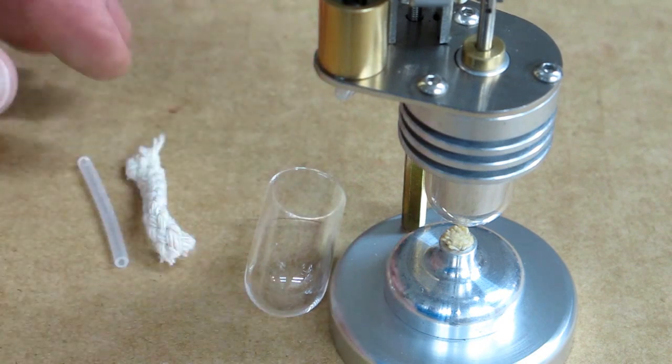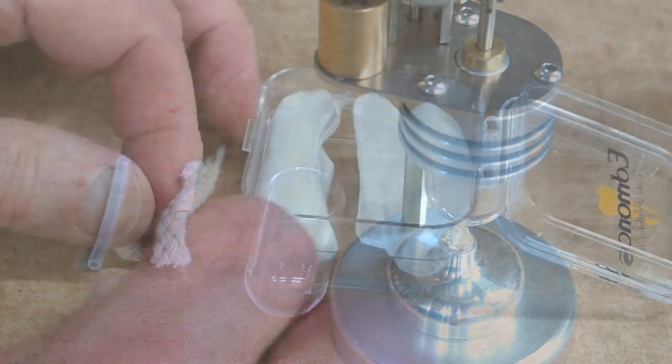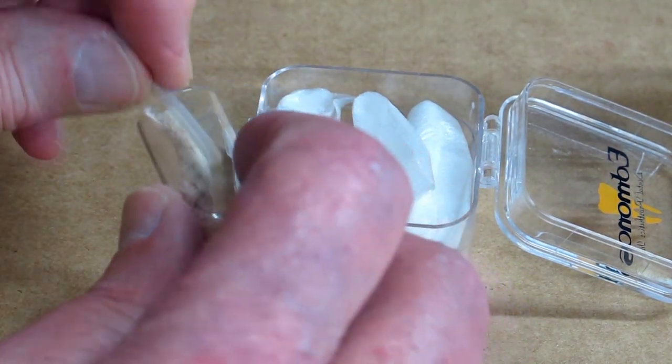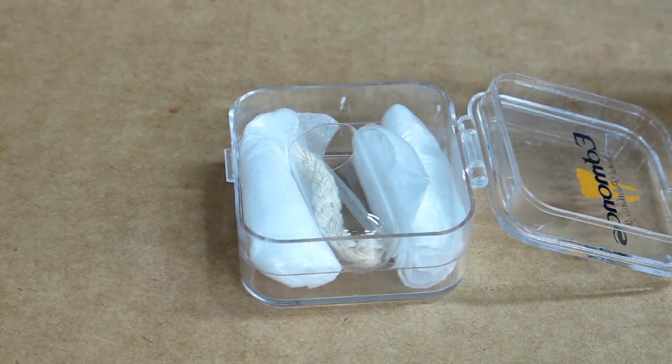And with the engine comes a spare glass, a spare wick, and a spare tube. And I suggest you put these pieces inside the glass, place that in something to protect it for future use.